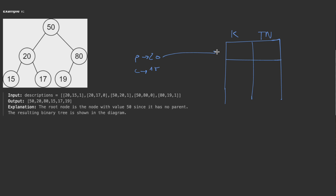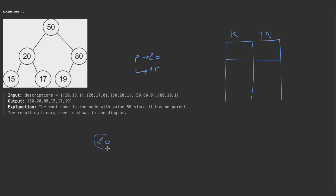We check if parent 20 is already in the map — it's not. We check child 15 — also not there. So we create a node with value 20 and a node with value 15. Since isLeft is one, we link 15 as the left child of 20. We then store both nodes in the map.